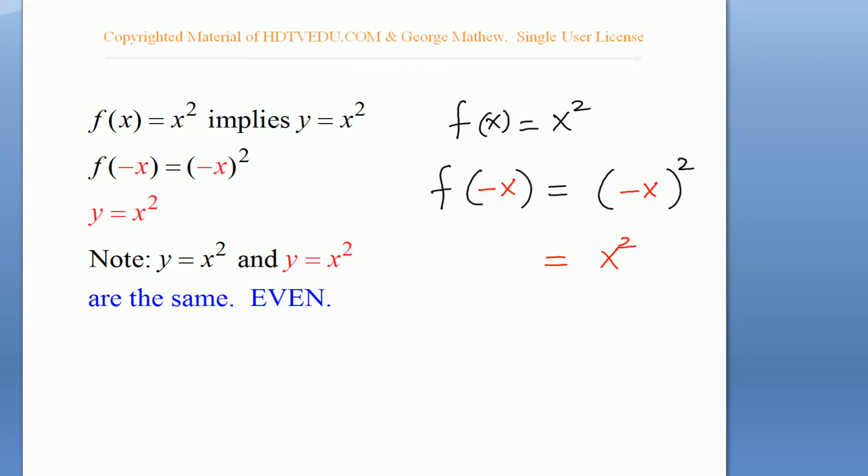The y value will always be the same even when we replace x with negative x. That means the graph is going to be symmetric about the y-axis. When the graph is symmetric about the y-axis, we have an even function. Let's plot y = x to the power of two.